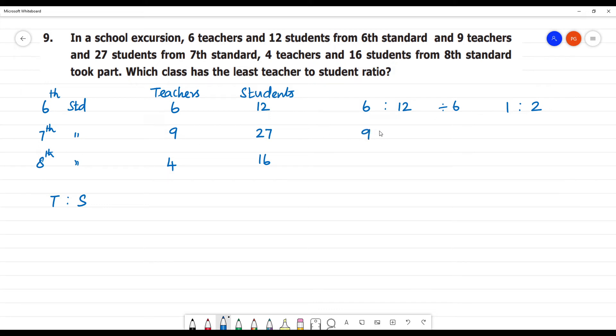7th standard ratio. Now, we have 9 is to 27. Now, both divide by 9. What is 1 is to 3?